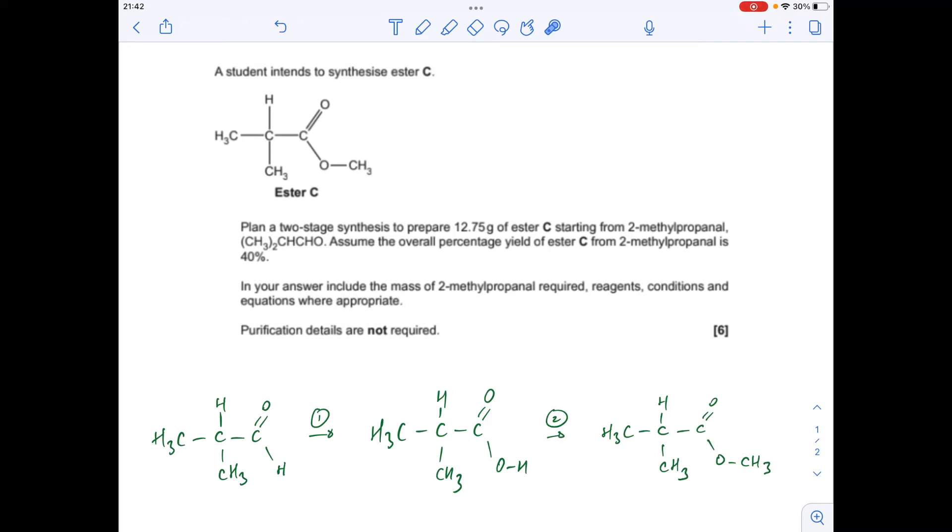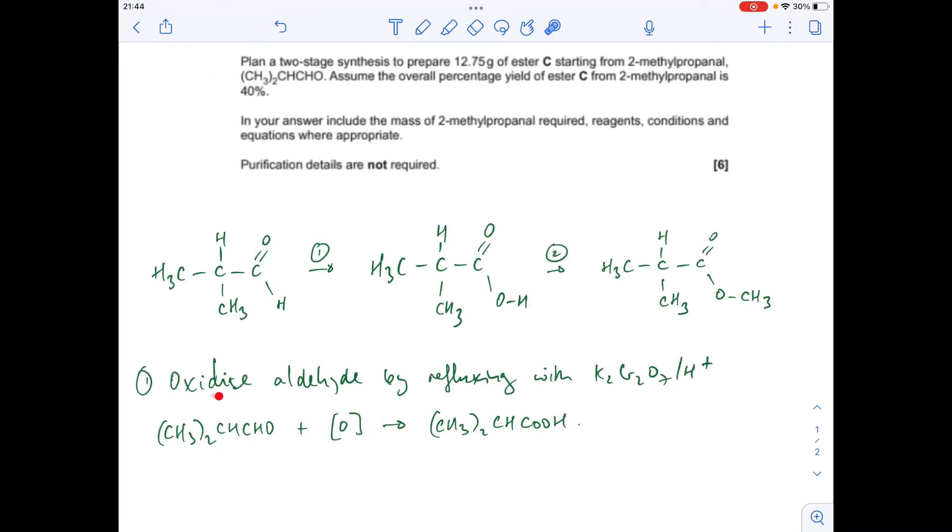Typically you would use reflux. So there it is written up there: oxidize aldehyde by refluxing with acidified potassium dichromate(VI), and there's the equation there.